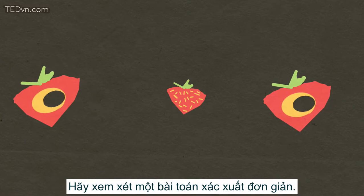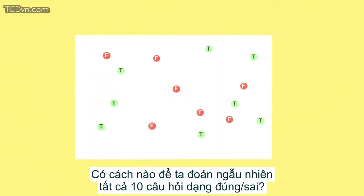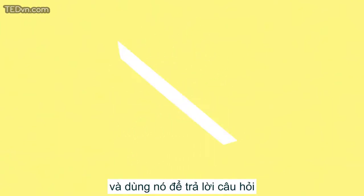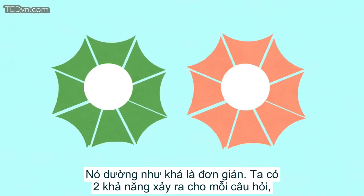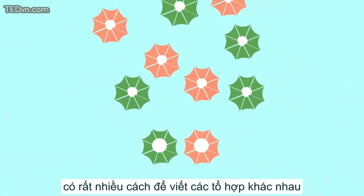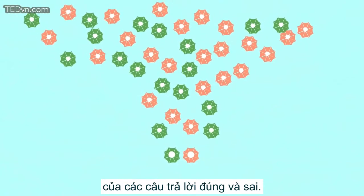Let's look at a simple probability problem. Does it pay to randomly guess on all 10 questions on a true-false quiz? In other words, if you were to toss a fair coin 10 times and use it to choose the answers, what is the probability you would get a perfect score? It seems simple enough. There are only two possible outcomes for each question, but with a 10-question true-false quiz, there are lots of possible ways to write down different combinations of Ts and Fs.